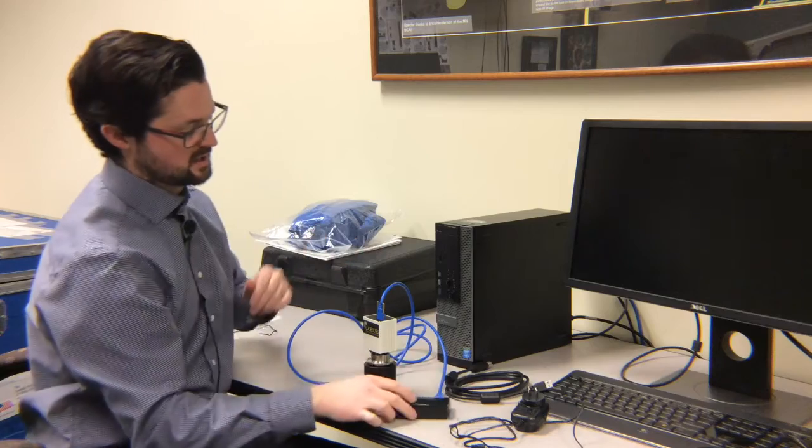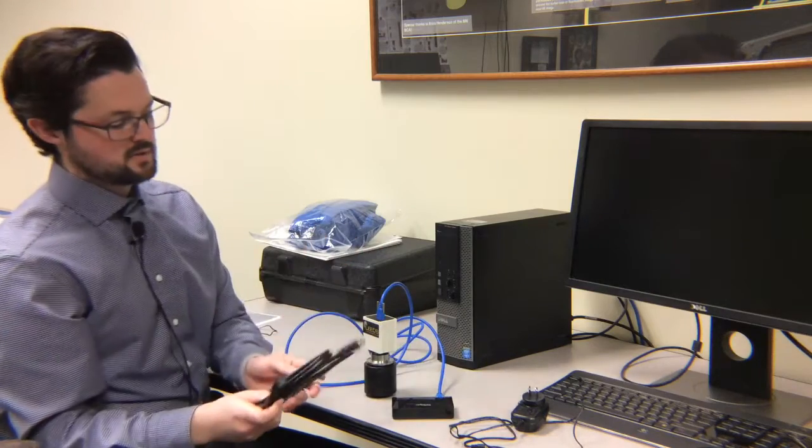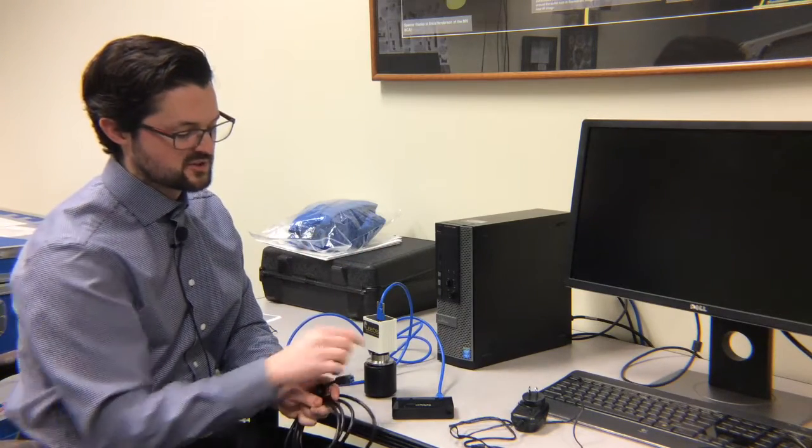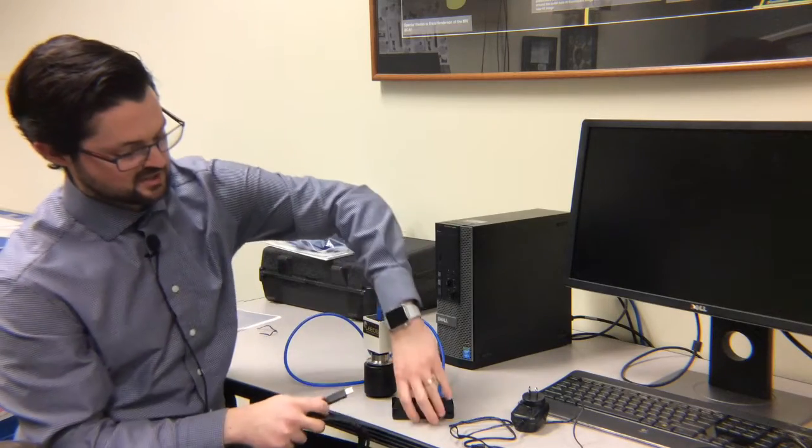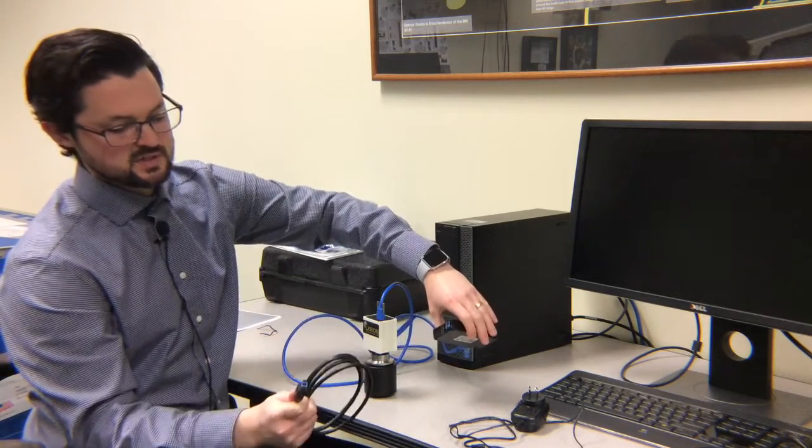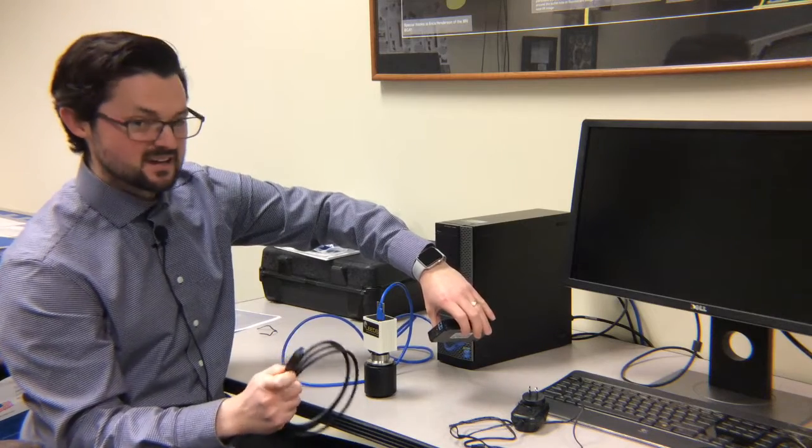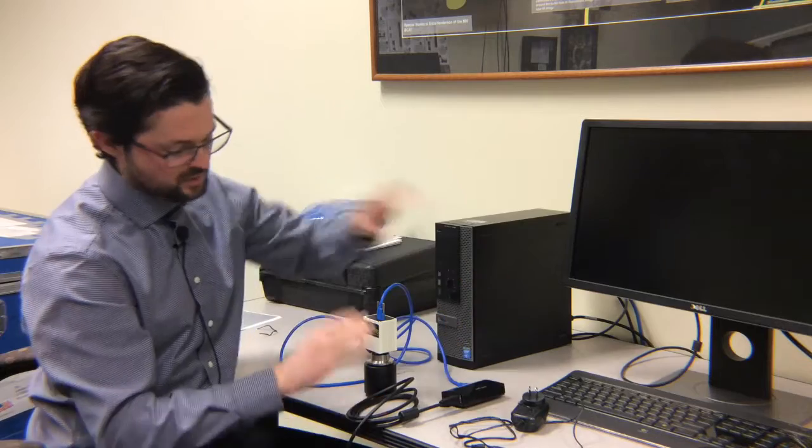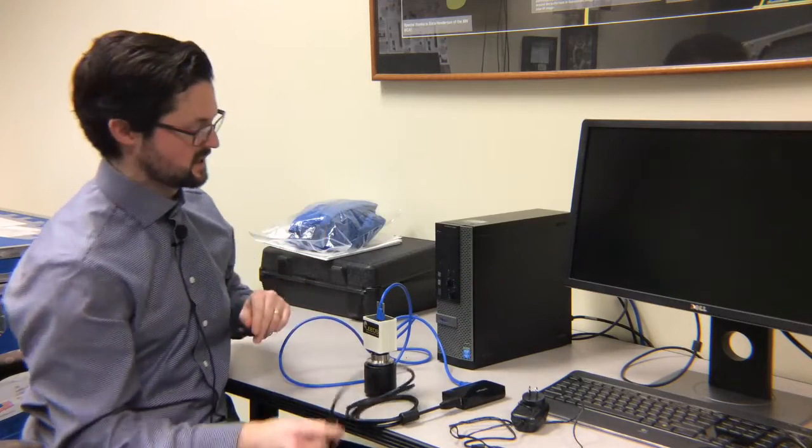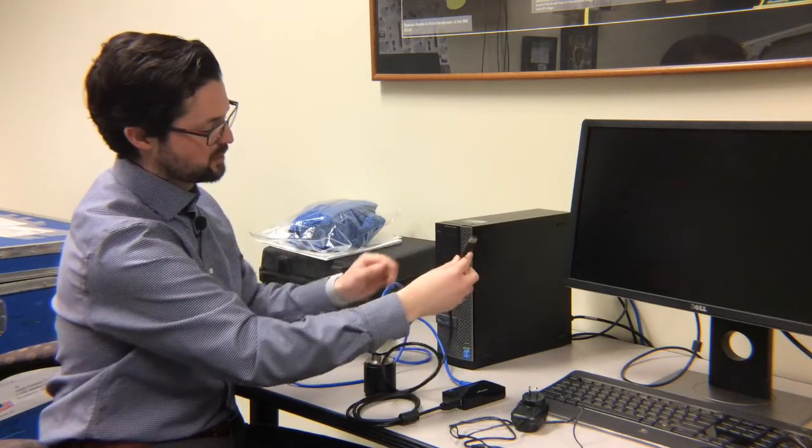Next thing we're going to do is plug the USB cable that came with the StarTech powered hub to your computer. You'll notice there's a USB, this is what's called USB-B, I believe, and that connects directly to the only part you can plug it into on the StarTech hub. This part of the cable you plug into your computer.